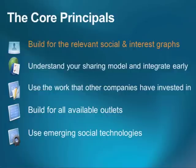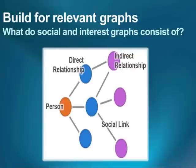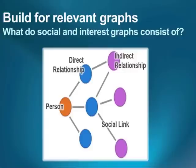What we see from Facebook or large-scale social networking companies is this large interconnected network of people. But if we break that down to its base level, all it really is is simple links from a root person to other persons or things. A root person with a direct like or friendship has a direct relationship. Those people might have friends who aren't friends with the original person — those are indirect relationships. All of these are interconnected by social links, and this is the core foundation of a social graph.